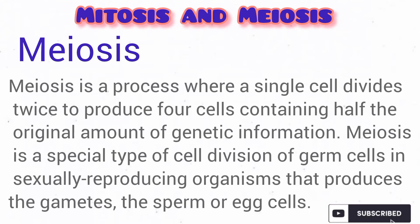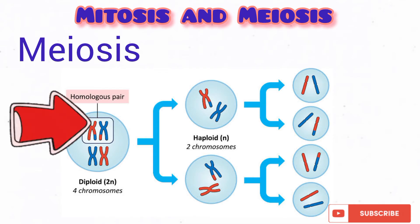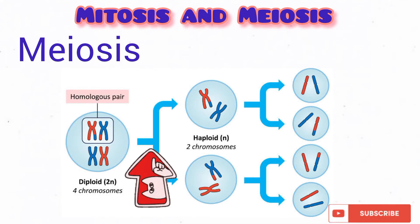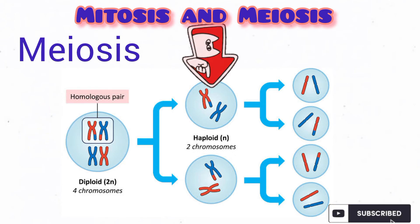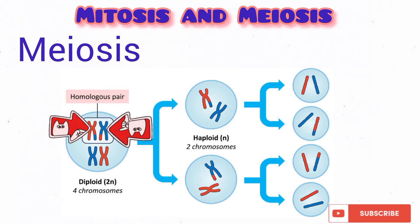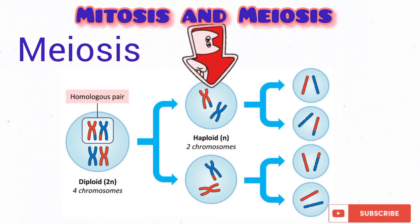Meiosis is a kind of cell division in which a single cell divides twice to produce four cells containing half the original amount of genetic material of the parent cell. The daughter cells are said to be haploid because they contain half the genetic material, while the parent cell is diploid. The parent cell undergoes a first division called meiosis 1, which reduces the diploid chromosome number to haploid — so four chromosomes in the parent become two chromosomes in each of the two daughter cells.